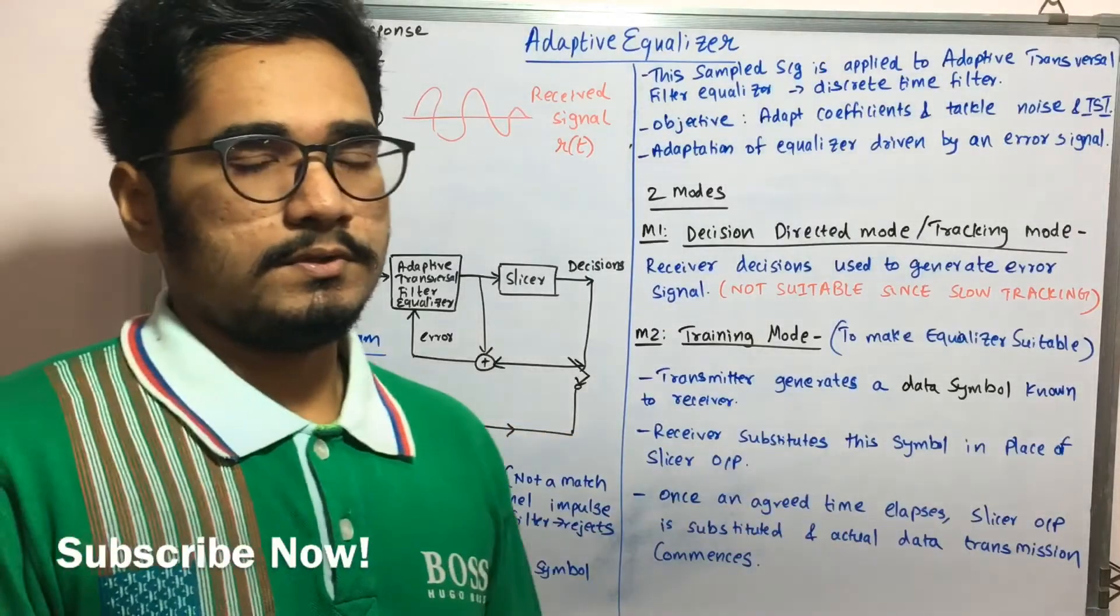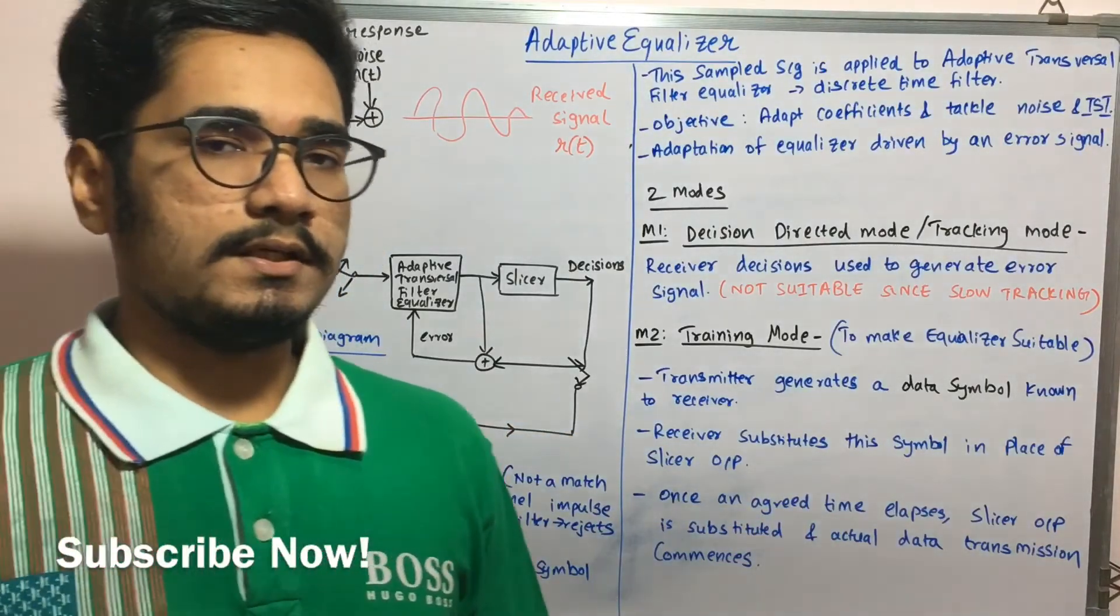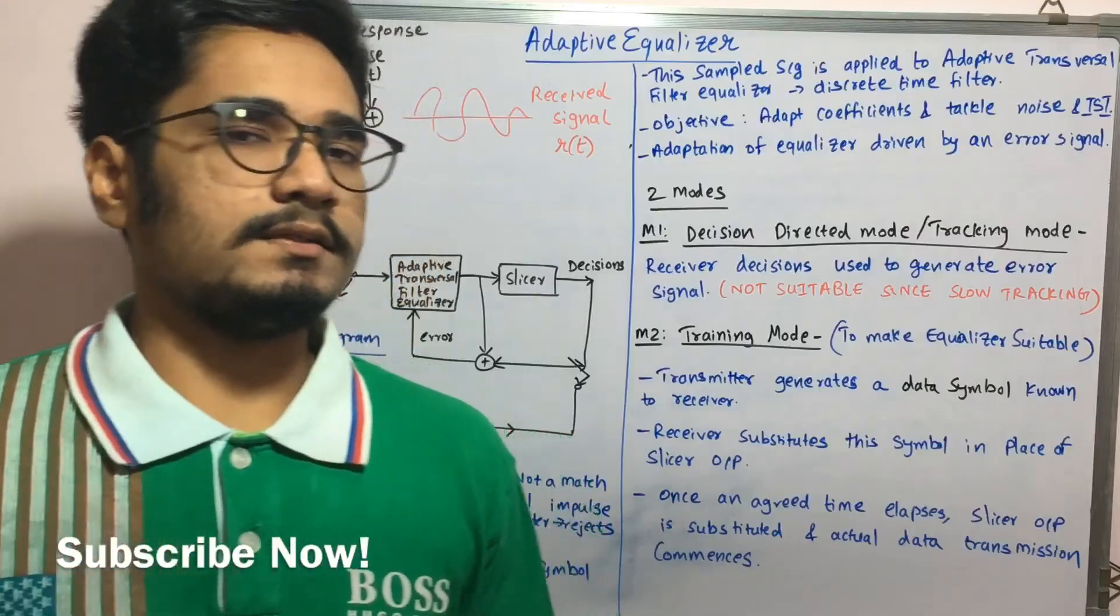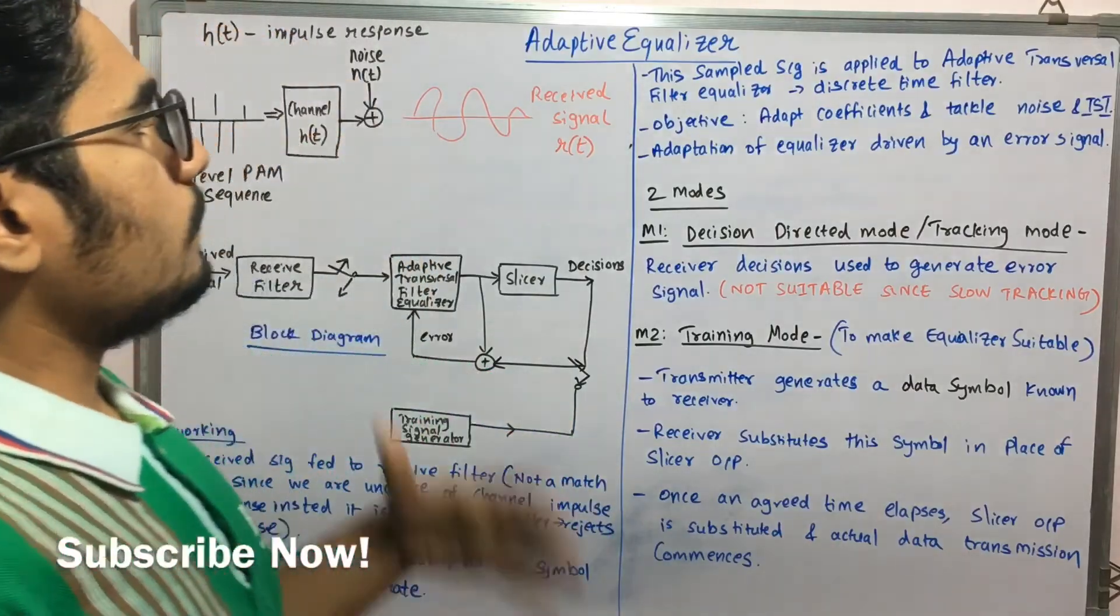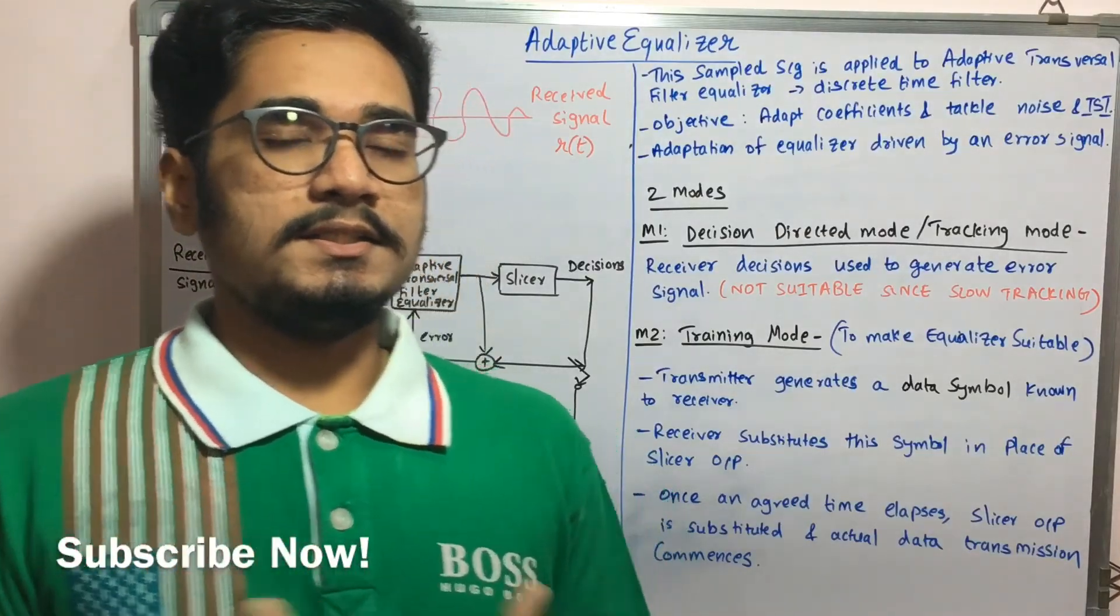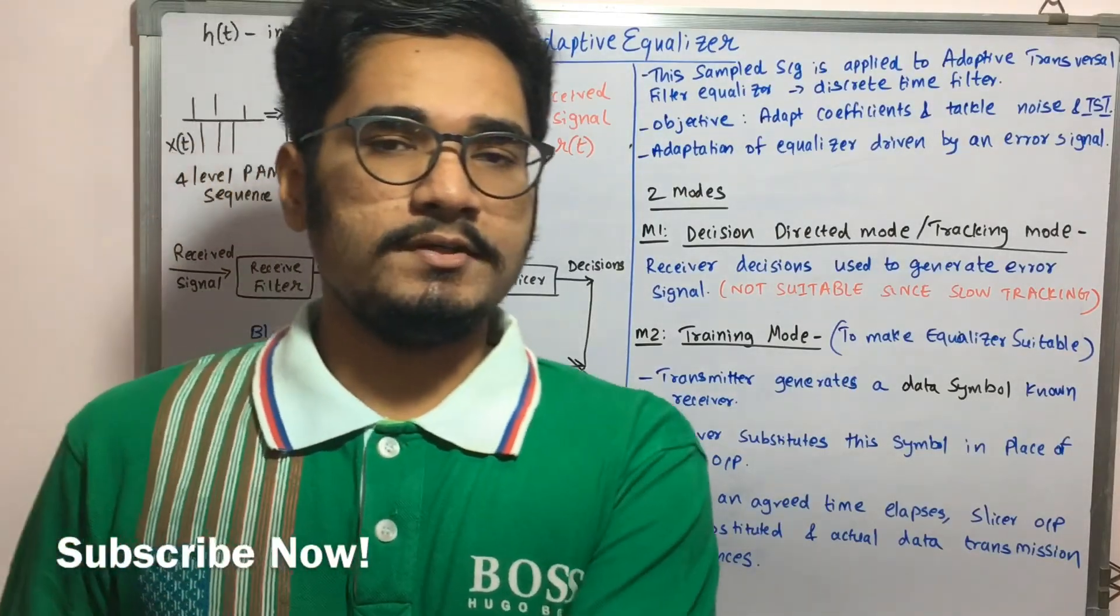So after this process, what we have is a high bandwidth channel for faster data transmission. And it's mainly used for mobile radio communication. So that was all regarding the adaptive equalizer in wireless digital communication. So hope you guys enjoyed this video.